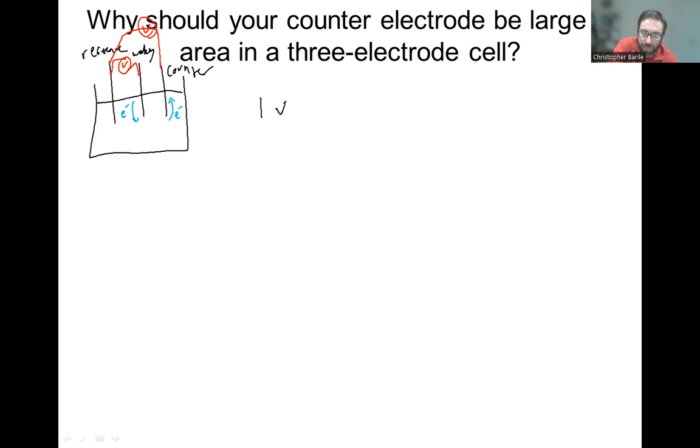However, so let's say, same, these are same materials. So this is just numbers to try to get us thinking. So plus one volt versus working. And if we had a one centimeter squared working, then the counter, if we had a one centimeter squared counter electrode is going to have to be at negative one volt versus the reference.